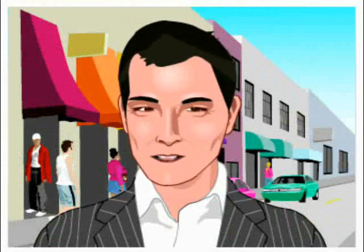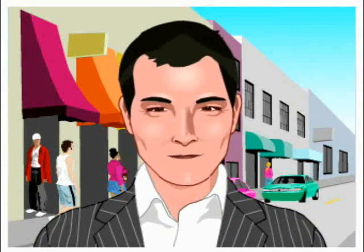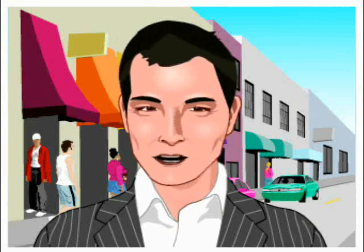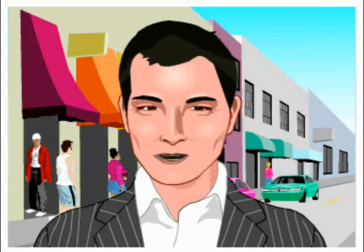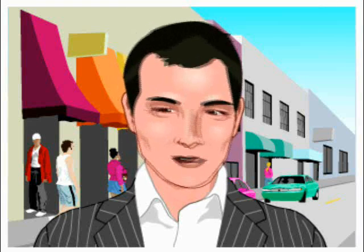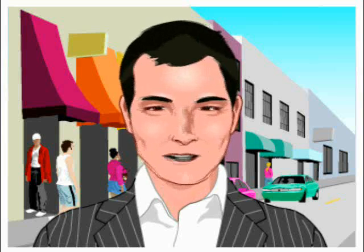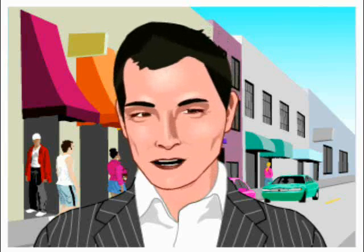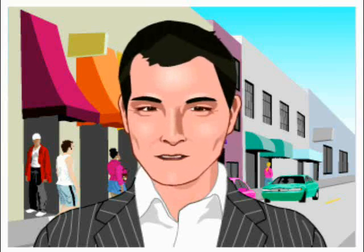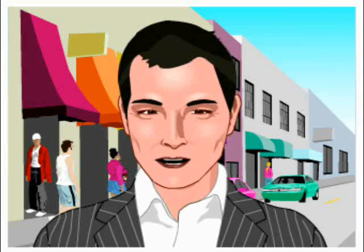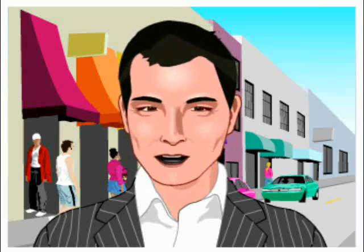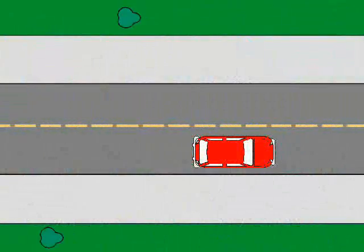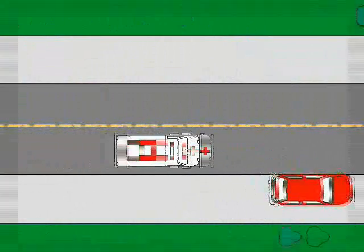If you are behind a vehicle that has stopped at a stop sign, you must also come to a full stop at the stop sign when the vehicle has moved on. If you are not sure who has the right of way, it is safer to yield the right of way to the other driver. It is better to avoid a collision than to insist on having the right of way. Never pass a vehicle that has stopped at a stop sign, traffic light, or crosswalk. Always yield right of way to emergency vehicles when they have their lights flashing and the siren on.